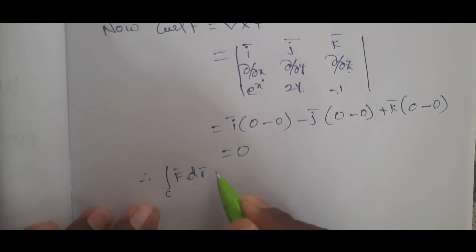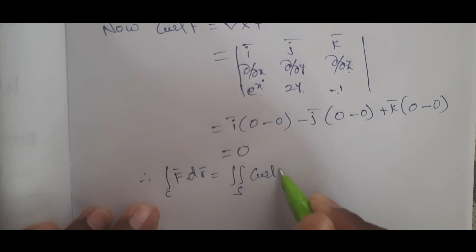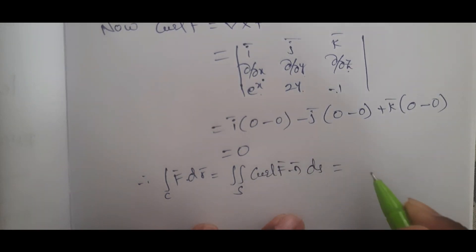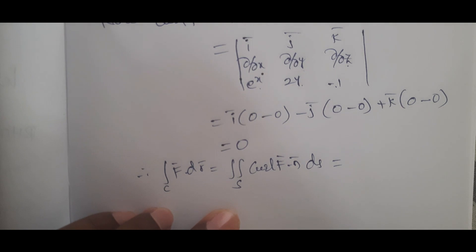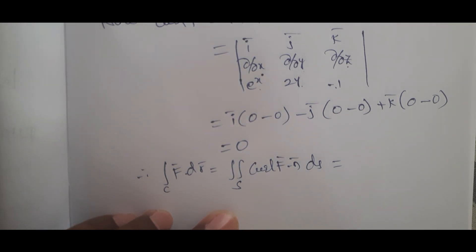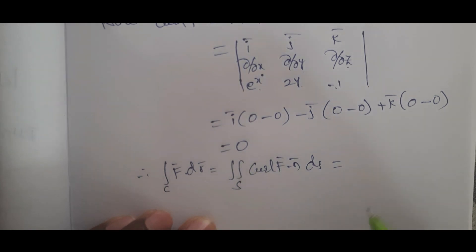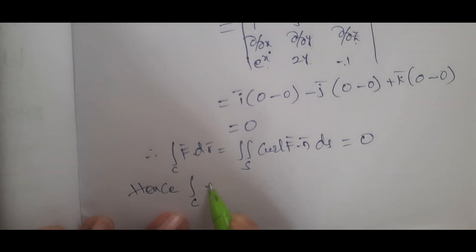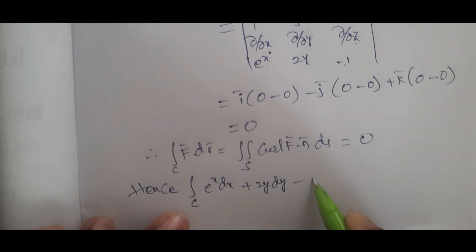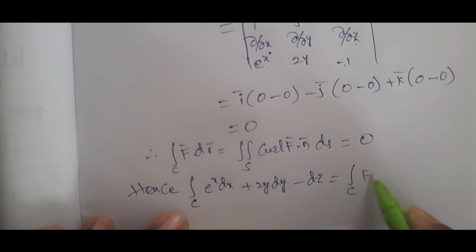Applying Stokes theorem, since the surface lies in the z = 2 plane, n = k. Since curl F = 0, the complete value is 0. Hence, integral c of e^x dx + 2y dy − dz = 0. That is the answer.